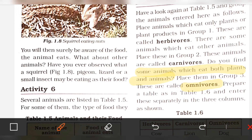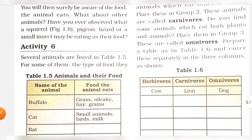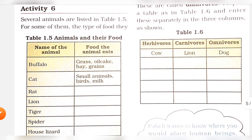Some animals eat both plants and animals — these are omnivores. There are three types of animals: herbivores, carnivores, and omnivores. Divide and prepare Table 1.6 listing the omnivores and other animals.